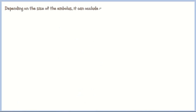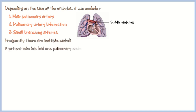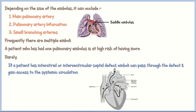Depending on the size of the embolus, it can occlude the main pulmonary artery, the pulmonary artery bifurcation (known as saddle emboli), or small branching arteries. Frequently there are multiple emboli, and a patient who has had one pulmonary embolus is at high risk of having more. Rarely, if a patient has an inter-atrial or interventricular septal defect, emboli can pass through the defect and gain access to the systemic circulation — these are known as paradoxical emboli.